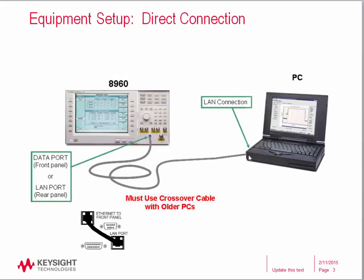There are two ways to connect your PC to the test set. A direct connection allows you to read the configuration from one test set. In addition to the test set, you will need a computer with LAN capabilities and a LAN cable — this is the example we will be using in the video. You can connect to either the test set's front panel data port or to the rear panel LAN port.